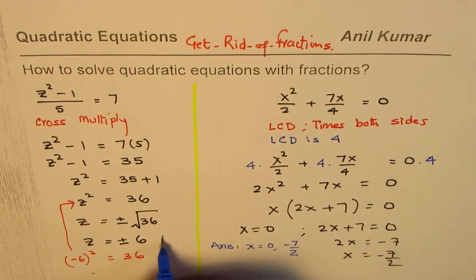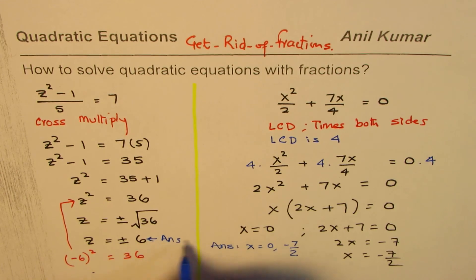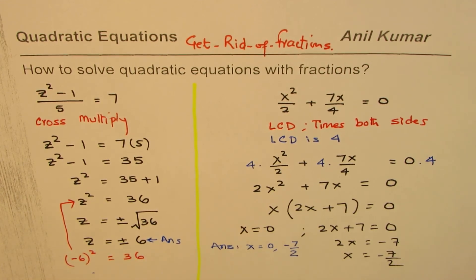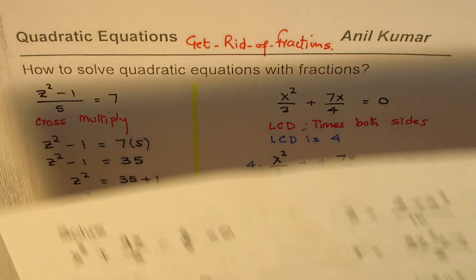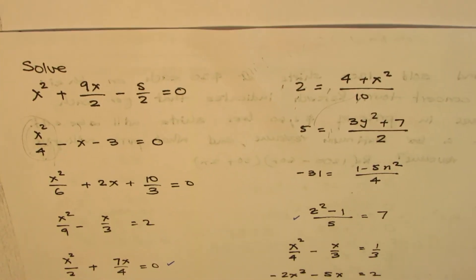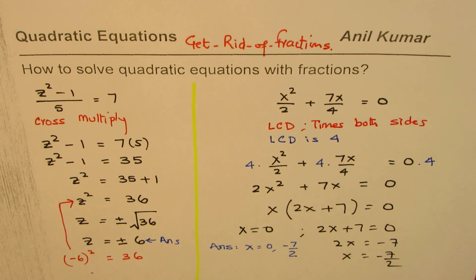In this case, the answer is z equals to plus minus 6. I hope that helps to understand how we can solve quadratic equations which involve fractions. So I'll take a few more examples and kind of complete this list. So I hope that is going to help many of my students, especially of grade 10, who are just beginning to learn this here. Thank you and all the best.